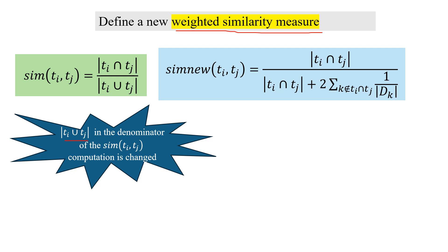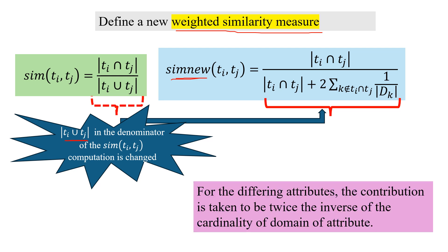Ti union tj in the denominator of this similarity is changed. We use sim nu only to differentiate between the two measures. Ti union tj has been replaced, and for the differing attributes the contribution is taken to be twice the inverse of the cardinality.